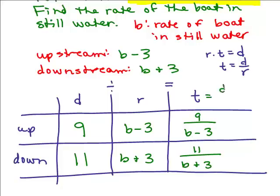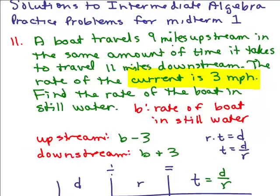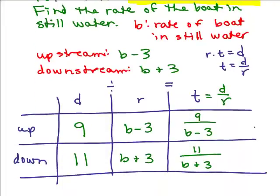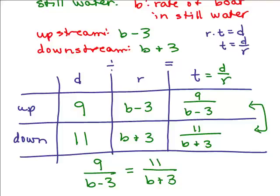So to get the time upstream, you do 9 divided by (B minus 3), and to get the time downstream, it's 11 over (B plus 3). Going back to the problem, it says the boat travels 9 miles upstream in the same amount of time — that's the key. These two times must be equal to each other, and that gives us our equation. That's the hardest part: getting to the equation.